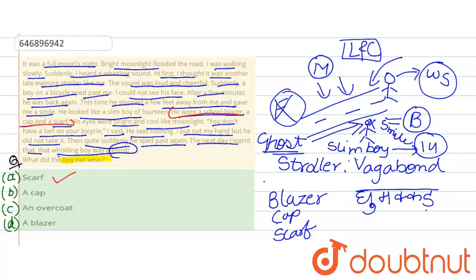Yes. Usne scarf pehna tha. Cap pehni thi. School blazer pehna tha. Overcoat ki kahin baat nahi hai. So the correct option is overcoat. Because humse poocha gaya boy not wear, yaani usne nahi pehna tha. So usne an overcoat nahi pehna tha. So C is the right option.